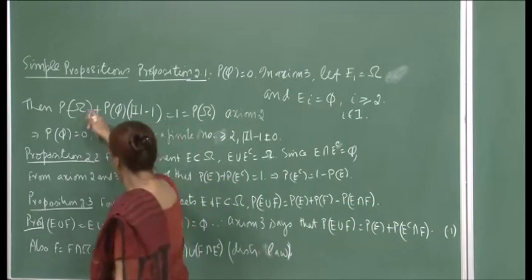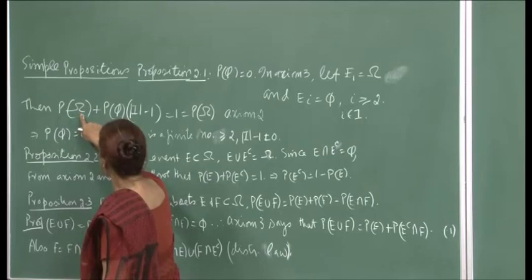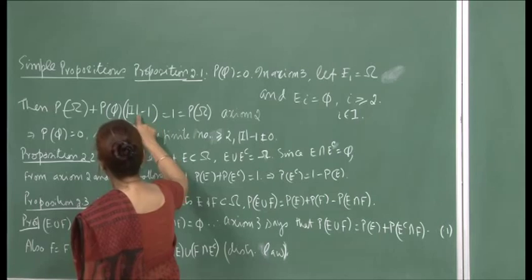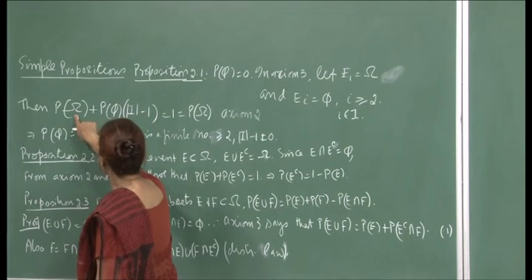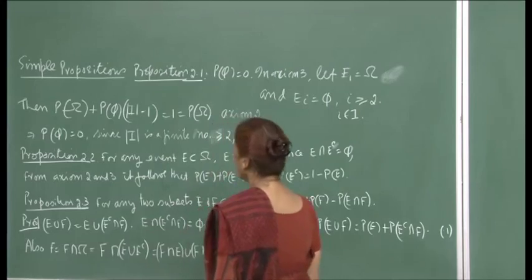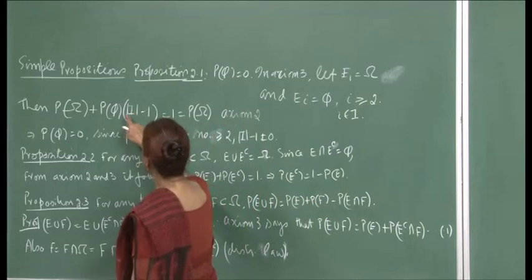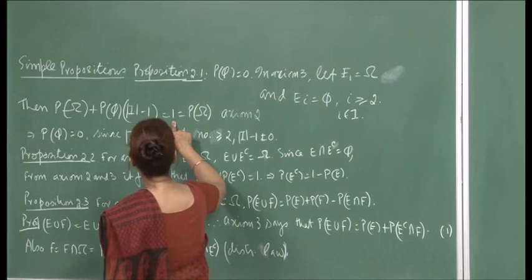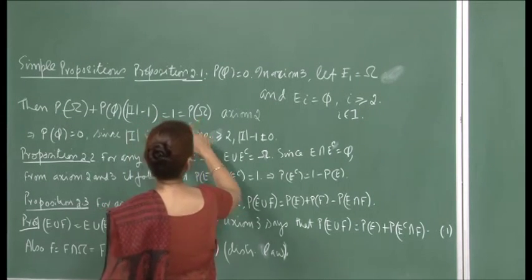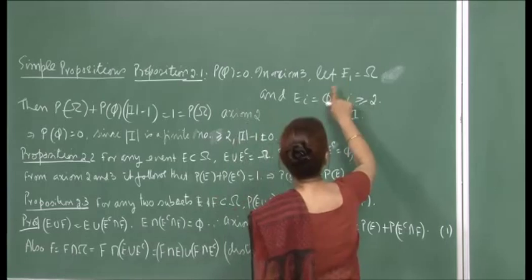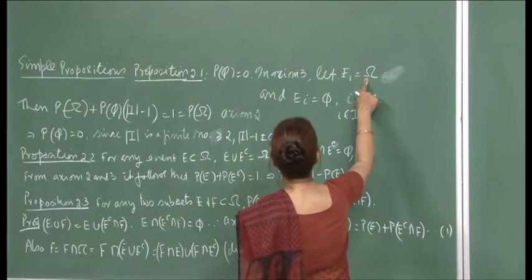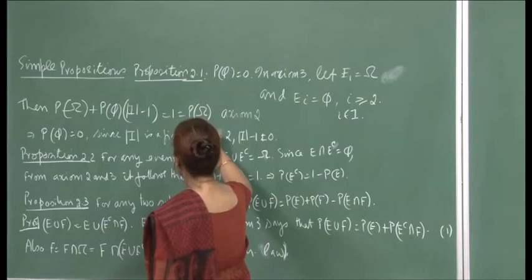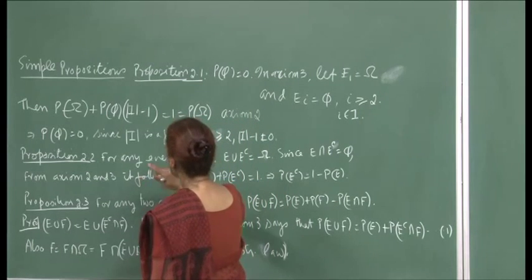Applying axiom 3, I write P(Ω) plus P(∅) added (|I| − 1) times, because one index has gone to Ω. So this gives P(∅) × (|I| − 1), and this has to equal 1, because P(Ω) = 1 by axiom 2.